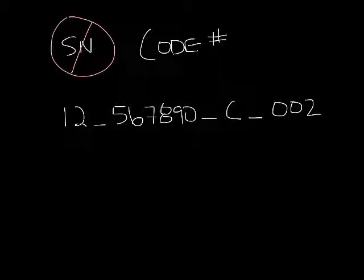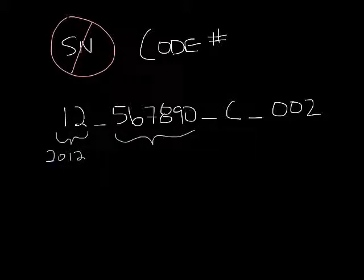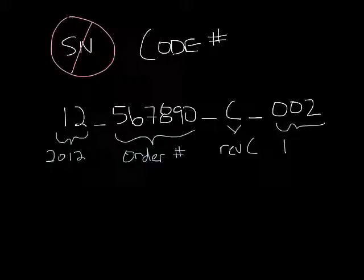From this code we know that the unit was made in 2012. The next set of digits are the order number. The letter is the revision, and then the last three digits are the line. So in this case, 2012, order 567890, revision C, line 2.